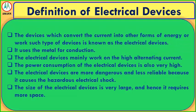The definition of electrical devices: devices which convert current into other forms of energy or work are known as electrical devices. They use metal for conduction and mainly work on high alternating current. The power consumption of electrical devices is very high, and they are more dangerous and less reliable because they pose the risk of hazardous electrical shock. Their size is very large and hence requires more space.